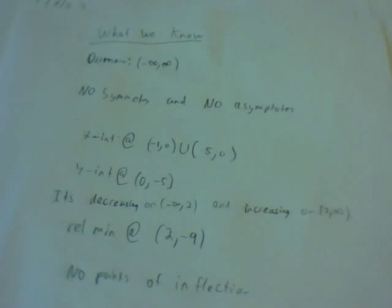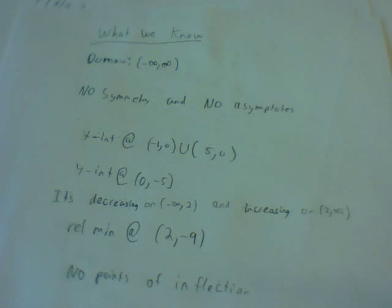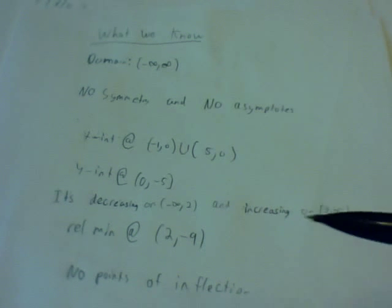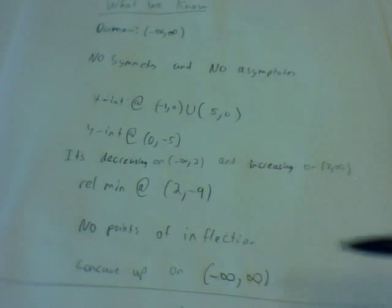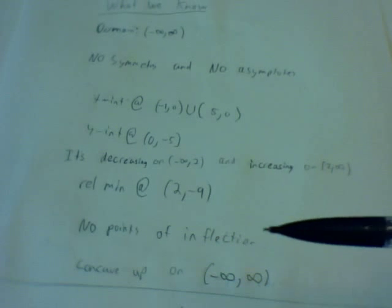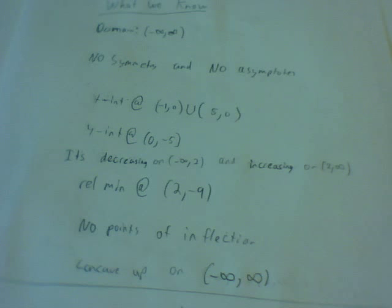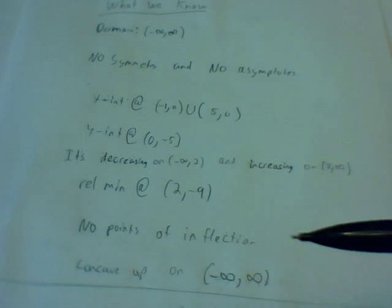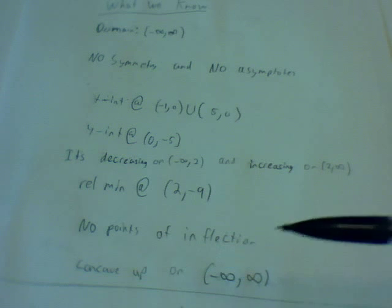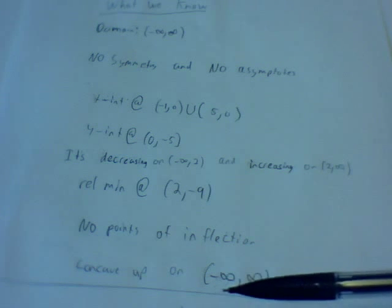To summarize what we know: the domain is negative infinity to infinity. There is no symmetry or asymptotes. We have x-intercepts at (-1, 0) and (5, 0), and a y-intercept at (0, -5). The function is decreasing on negative infinity to 2 and increasing on 2 to infinity. We have a relative minimum at (2, -9), no points of inflection, and the function is concave up on negative infinity to infinity.